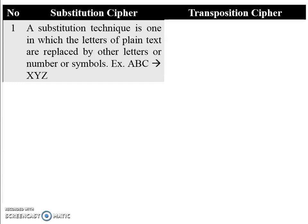A substitution technique is one in which letters of plaintext are replaced by other letters, numbers, or symbols. So we can say a letter, number, or symbol is substituted by another letter, number, or symbol. For example, you can see A is replaced by X, B is replaced by Y, and C is replaced by Z.